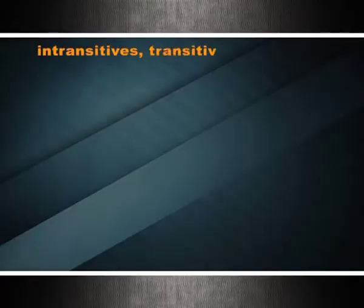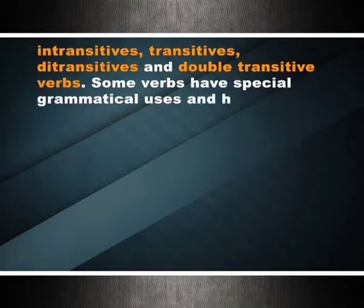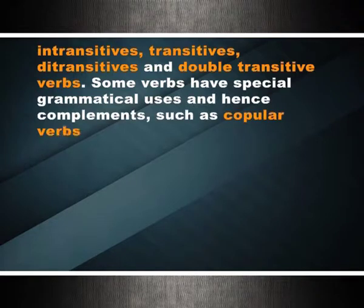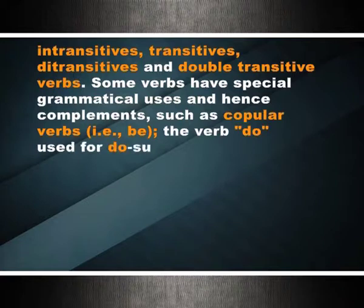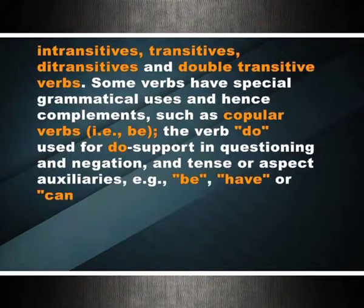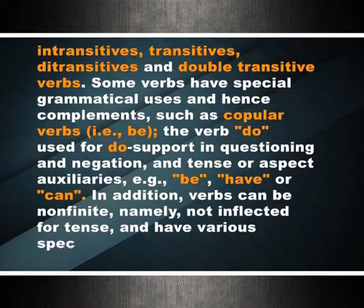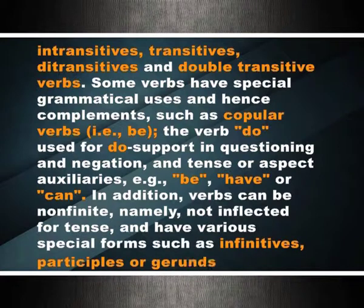Verb types: verbs may vary by type, each determined by the kinds of words that accompany it. Classified by the number of valency arguments, four basic types are distinguished: intransitive, transitive, ditransitive, and double-transitive verbs. Some verbs have special grammatical uses, such as copular verbs, the verb 'do' used for support and questioning, and tense or aspect auxiliaries such as 'be,' 'have,' or 'can.' Verbs can also be non-finite — not inflected for tense — and have special forms such as infinitives, participles, or gerunds.